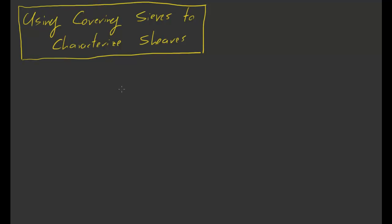Now that we know what sieves are, we'd like to use them for something. One thing we can use them for is to characterize sheaves. I'll articulate the problem of characterizing sheaves first, and then show how sieves can be brought to bear on that problem. I'll give both an internal and an external answer — one answer using internal sieves and one using external sieves.